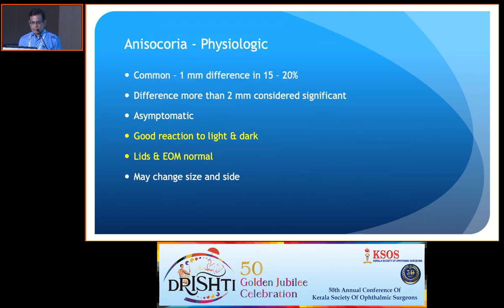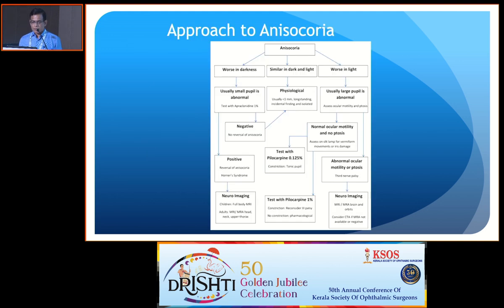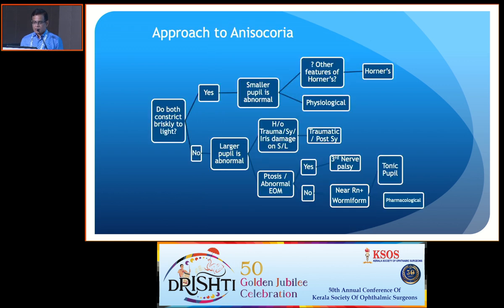In physiological anisocoria, all reactions will be normal and there will be no problems with the lids or extraocular muscles — a quick cranial nerve examination will be normal, and it is a diagnosis of exclusion. The usual flowchart I use is this: you have a small pupil and a large pupil, you check the light reaction, and if the reactions are normal, assume it is the small pupil that is abnormal and look for other features of Horner syndrome.